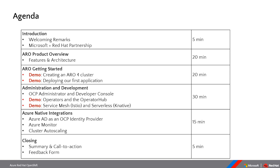We'll move on to the agenda for today. We're doing the introduction at the moment, then we'll focus on the partnership between Microsoft and Red Hat, then move on to the product overview — features and architectural aspects of ARO (Azure Red Hat OpenShift). From now on I'll just say ARO instead of Azure Red Hat OpenShift. Then we'll look at how to get started, how to create your first cluster, spin it up, and deploy your first app. Mike will run through demonstrations using the OpenShift web console around administration and development perspectives. Lastly, we'll close out with Azure native integrations that complement the OpenShift container platform, and we'll ask for feedback to improve future sessions.